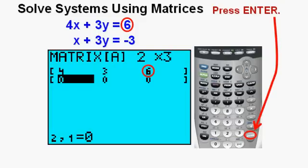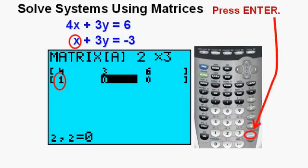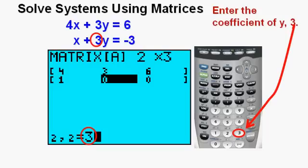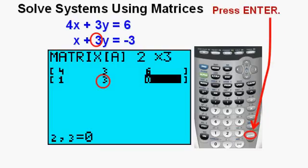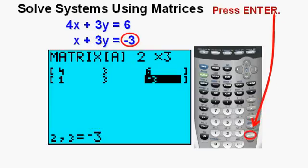Now we enter the coefficient of x in the second equation. What is the coefficient of x if it is just x? Well, it is 1, as in 1x. Press enter. We see the 1 in the proper place in the matrix. Enter 3, which is the coefficient of y in the second equation. Press enter. We see 3 in the proper place. Now enter the constant of the second equation by pressing the negative sign, then 3. Press enter. We see that negative 3 is in its place.